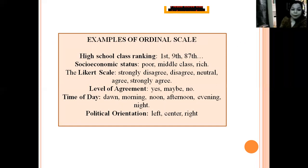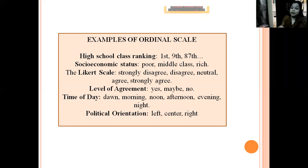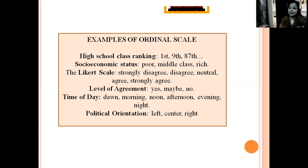Examples of ordinal scale include class rank — first, ninth, eighth, seventh — across India. Economic status: poor, middle class, rich. Likert-scale responses such as strongly agree, agree, disagree, and neutral are also in the ordinal scale. For nominal, statistical operations include proportion, mode, and coefficient. For ordinal, it is median, percentile, and rank difference correlation.